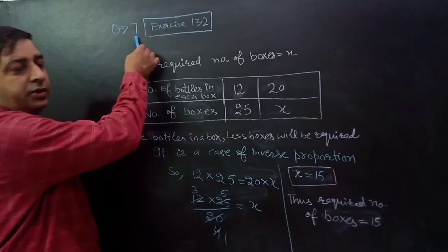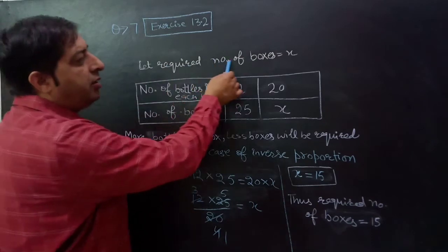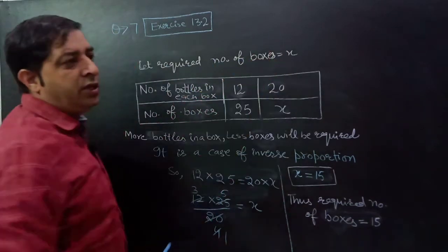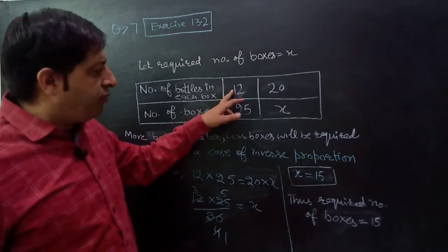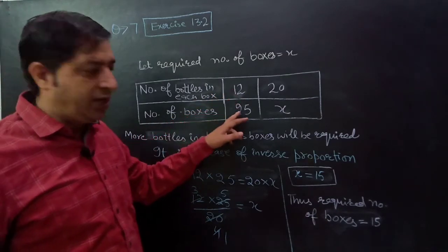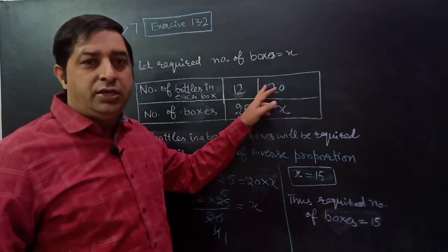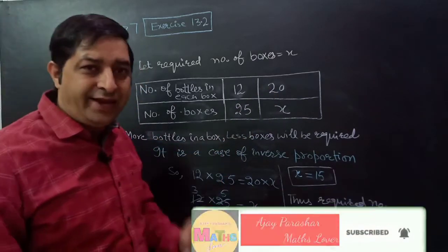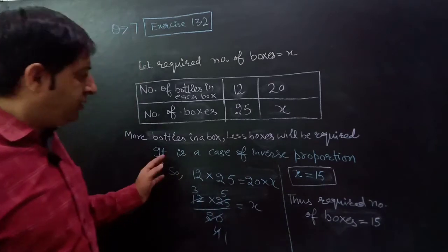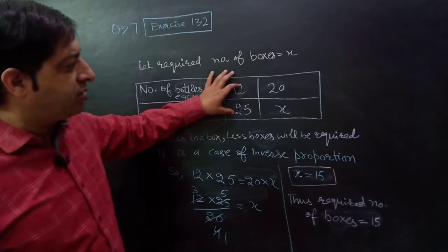Let's see its solution. Question number seven, exercise 13.2. Here we assume that the required number of boxes is equals to x. If there are 12 bottles in one box, we need 25 boxes. And if there are 20 bottles in a box, we need x boxes. Now more bottles in a box means we need less boxes. So it is a case of inverse proportion.